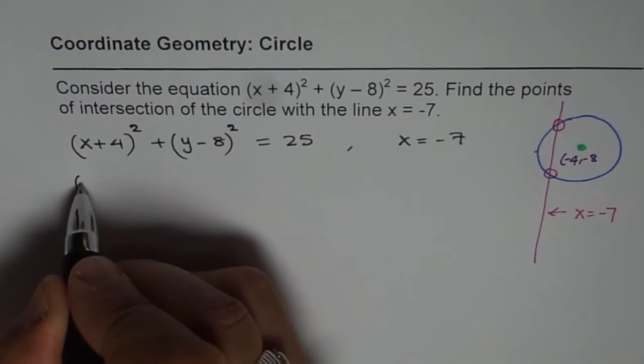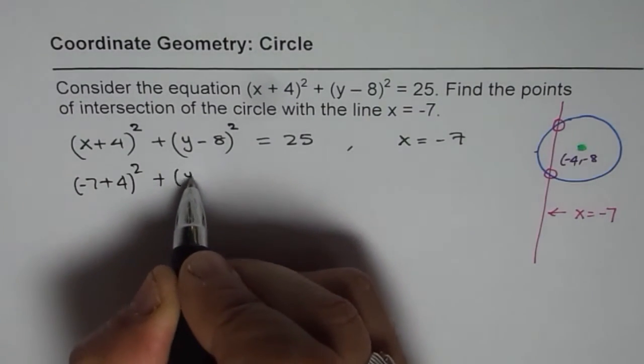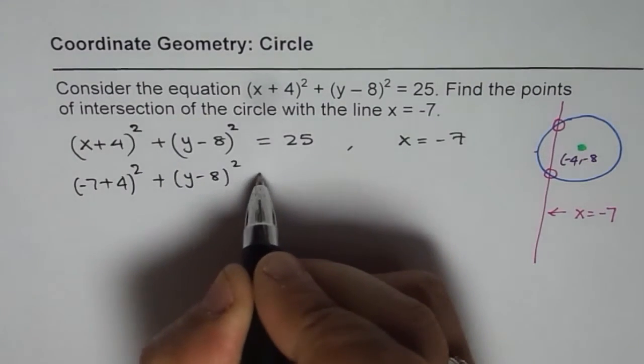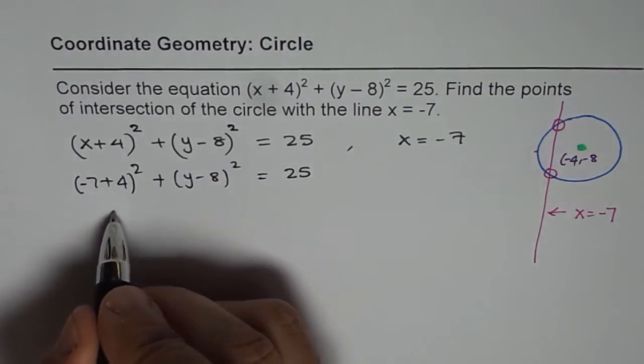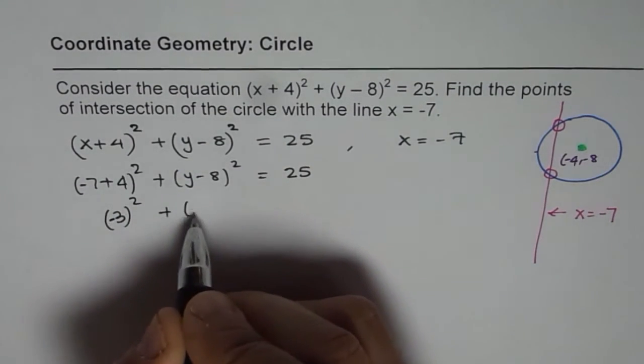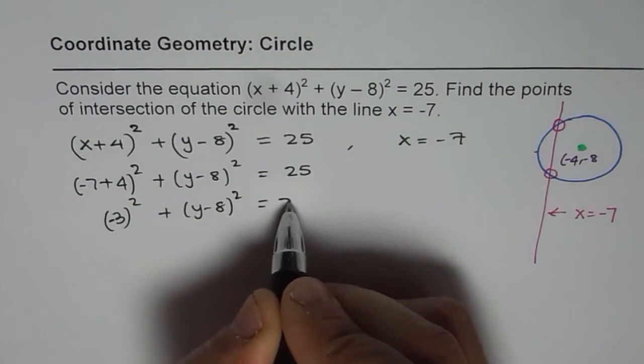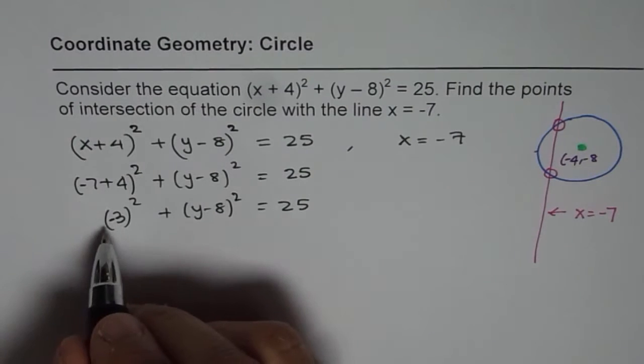Let's substitute: (-7 + 4)² + (y - 8)² = 25. Now -7 + 4 equals -3, so (-3)² + (y - 8)² = 25.